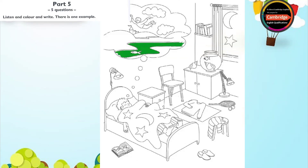Now you listen and colour and write. I can see a star outside. Can I colour that star now? Yes. Good idea. What colour do you want? I've got a yellow pencil here. Is that colour OK? Yes, that's fine.